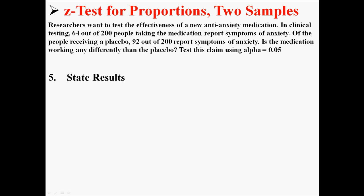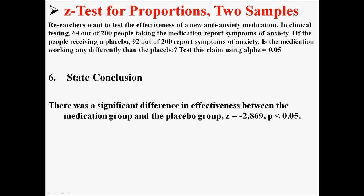For the results: remember we would reject the null hypothesis if Z is less than negative 1.96 or greater than positive 1.96. We got a Z of 2.869, which is definitely greater than 1.96, so we reject the null hypothesis and conclude that the two proportions are different. We conclude there was a significant difference in effectiveness between the medication group and the placebo group. The official way to write this is Z = 2.869, p < 0.05.